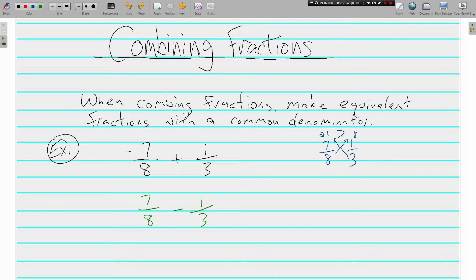I actually did not want to write that over again. I wanted to have a common denominator. 8 and 3 both go into what number? 24. 24 is the least common multiple of 8 and 3. How many times does 8 go into 24? 3 times. So we're going to multiply the 7 by 3 to get 21.